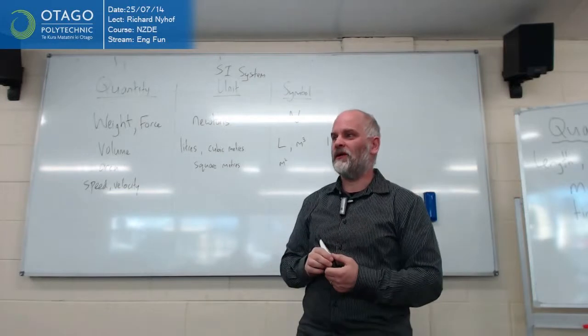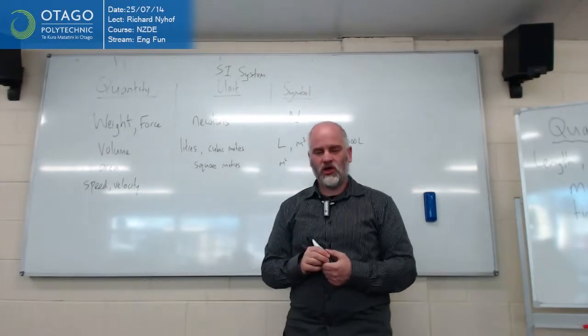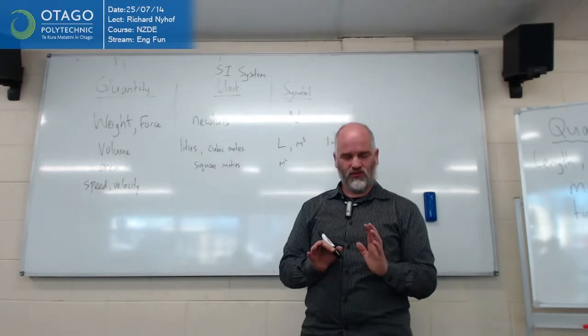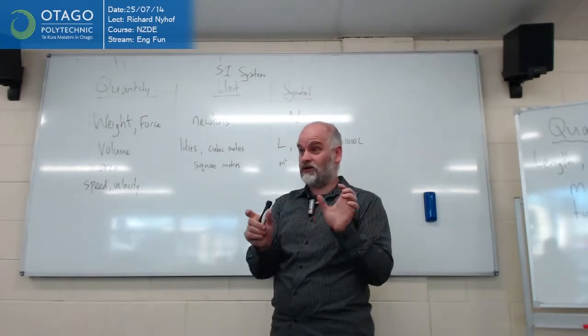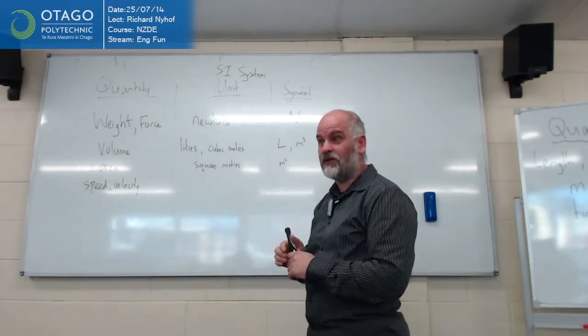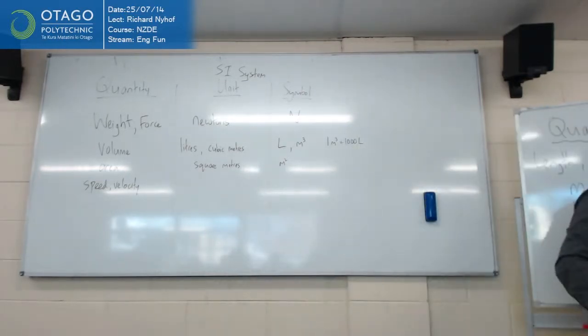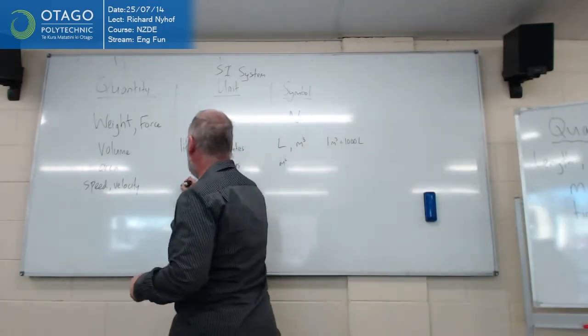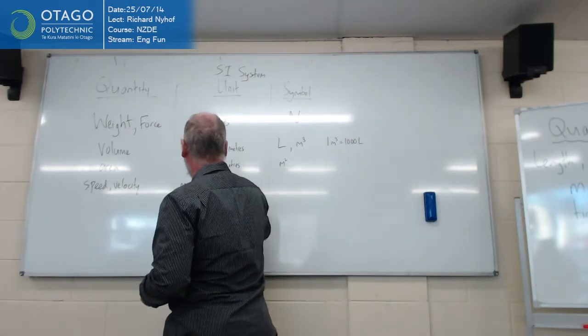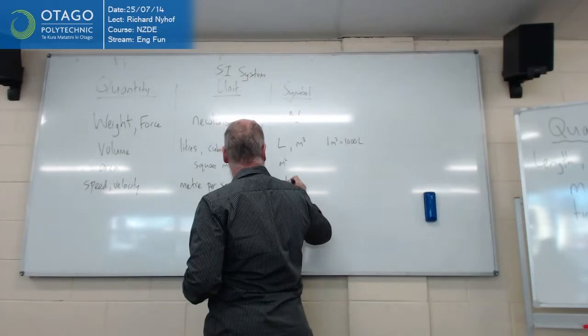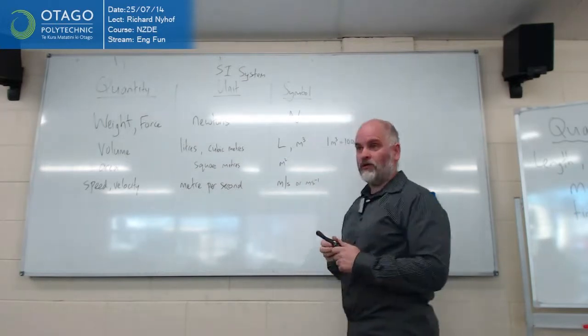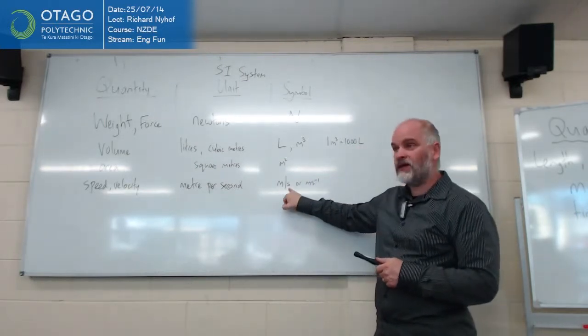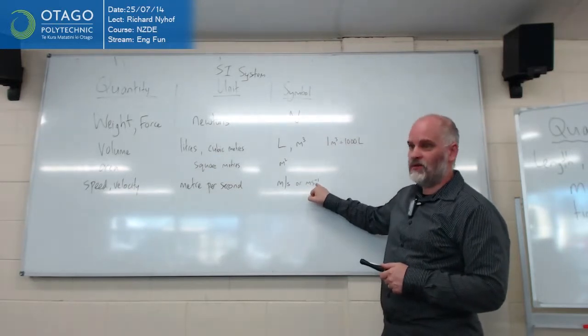And what's the unit going to be for speed? Kilometers per hour is a unit we use? Meters per second. That's a distance and a time. Which is kilometers per hour is a distance and a time. But if we're going to be using the SI unit, it's a basic system. Then we want time in seconds and we want distance in meters. So we're going to talk about meters per second.